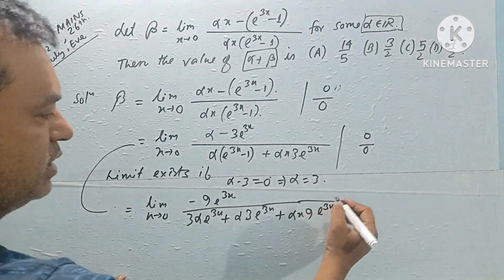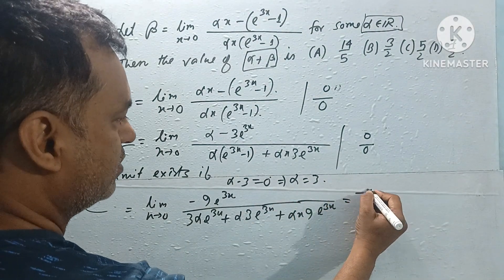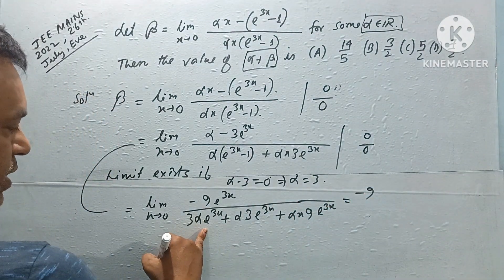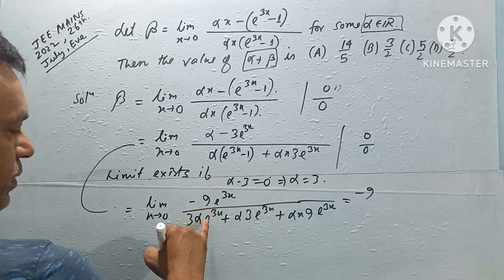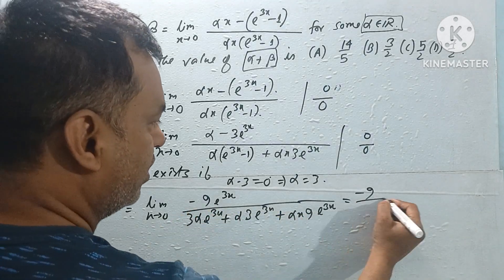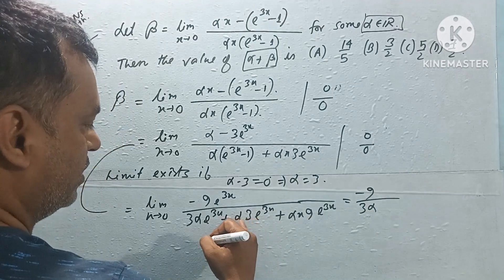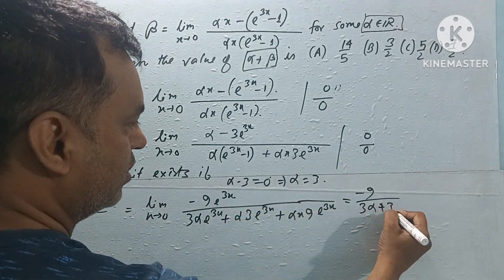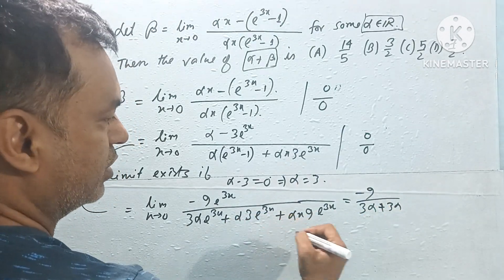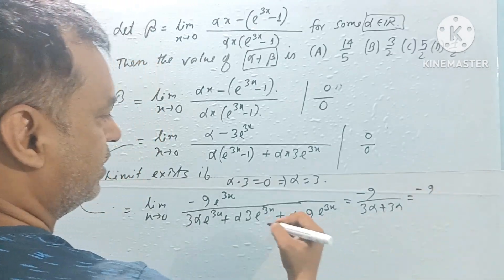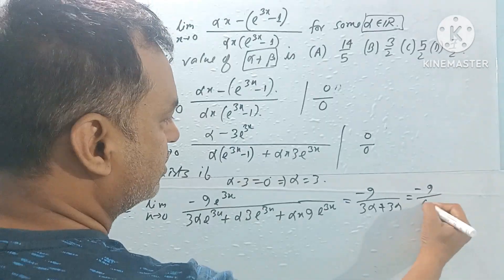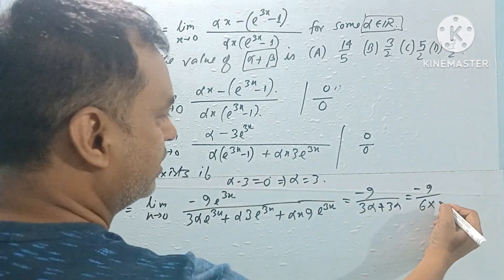Now putting the limit, the numerator becomes minus 9. In the denominator, this x term becomes zero, leaving 3 alpha plus zero, which is 3 alpha. So that means minus 9 divided by 6 alpha, which is 6 into alpha value of 3, equals 18.